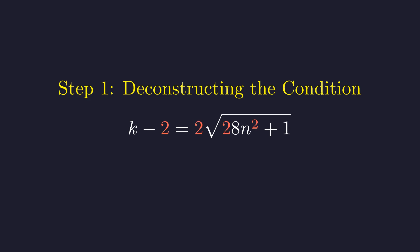Next, we divide by 2 to isolate the radical completely. We now have the square root of 28n² plus 1 equals the quantity k minus 2 divided by 2. Since k is an integer, the right-hand side is a rational number. This implies that the square root on the left must also be rational.